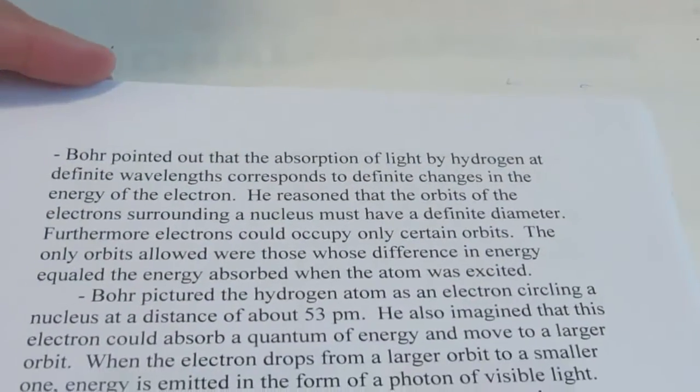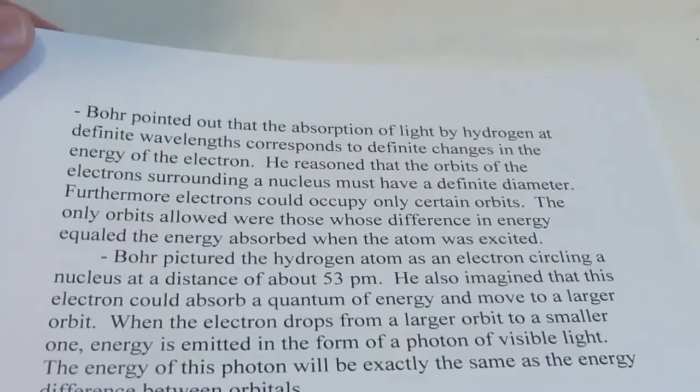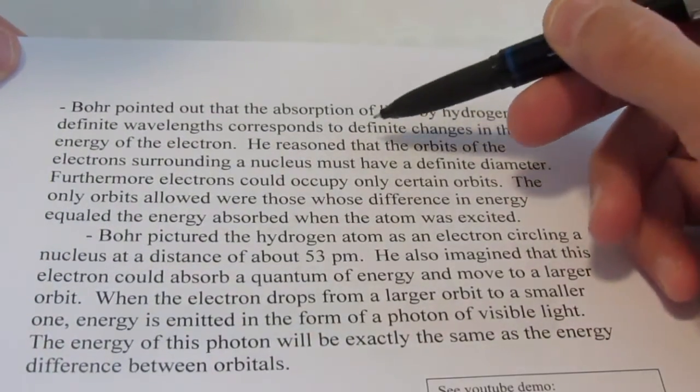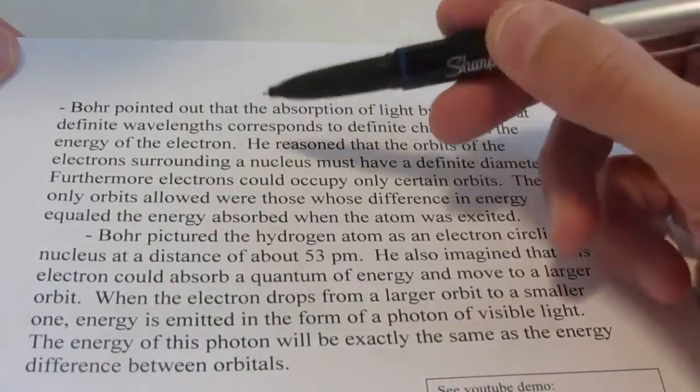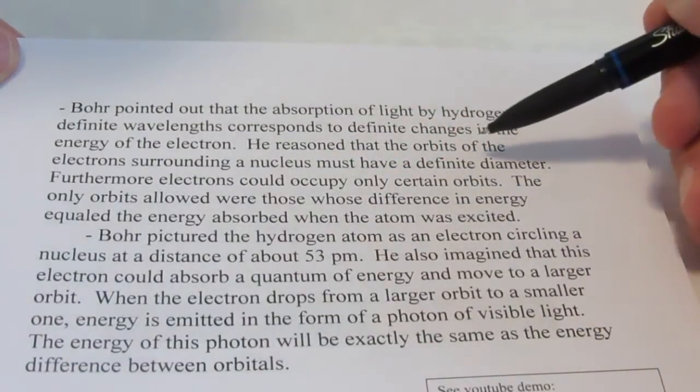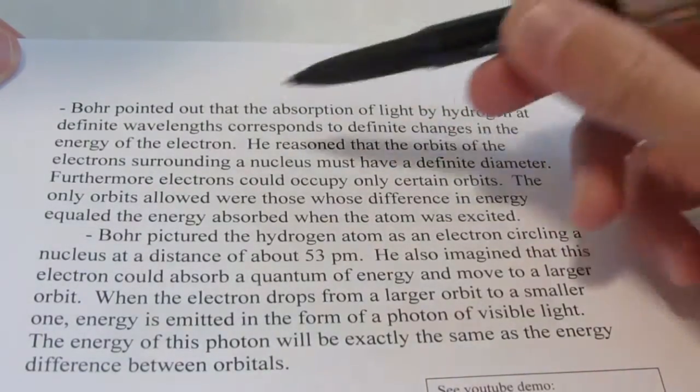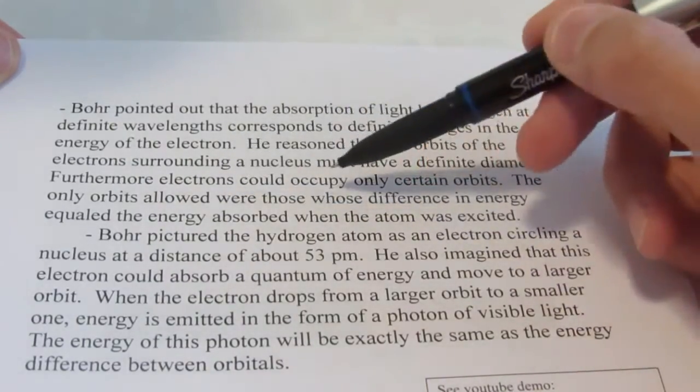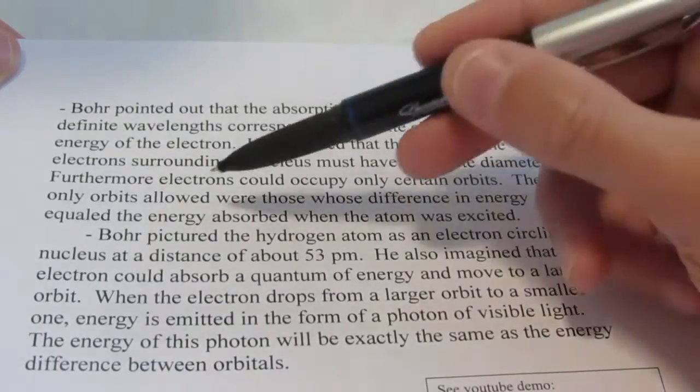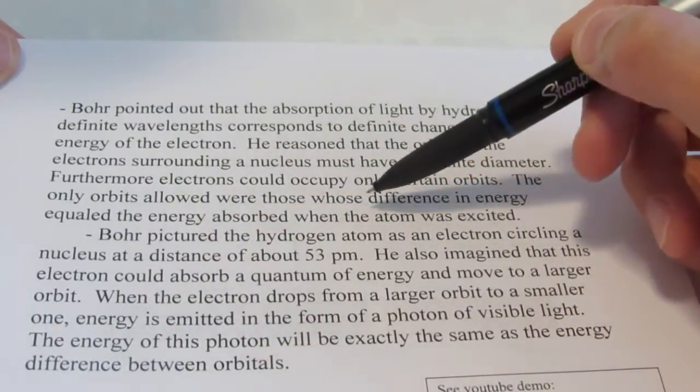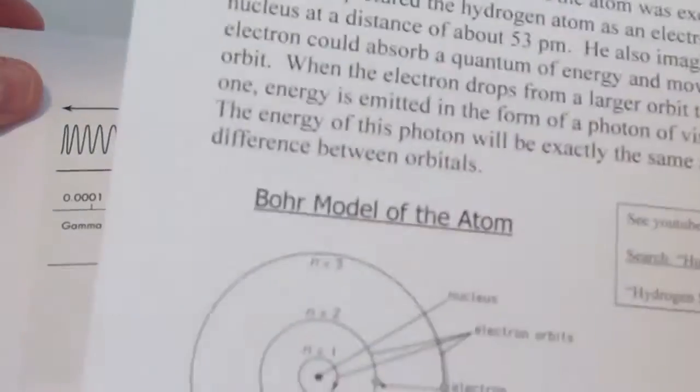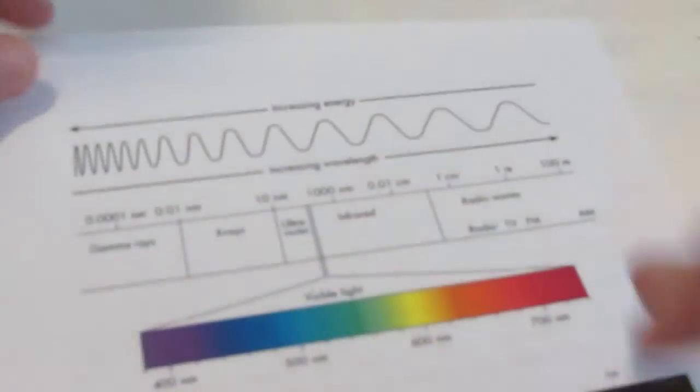Alright. So Bohr pointed out that the absorption of light by hydrogen at definite wavelengths corresponds to definite changes in the energy of the electron. He reasoned that the orbits of the electron surrounding a nucleus must have a definite diameter. Furthermore, electrons could occupy only certain orbits. The only orbits allowed were those whose difference in energy equaled the energy absorbed when the atom was excited. What the heck does that mean?